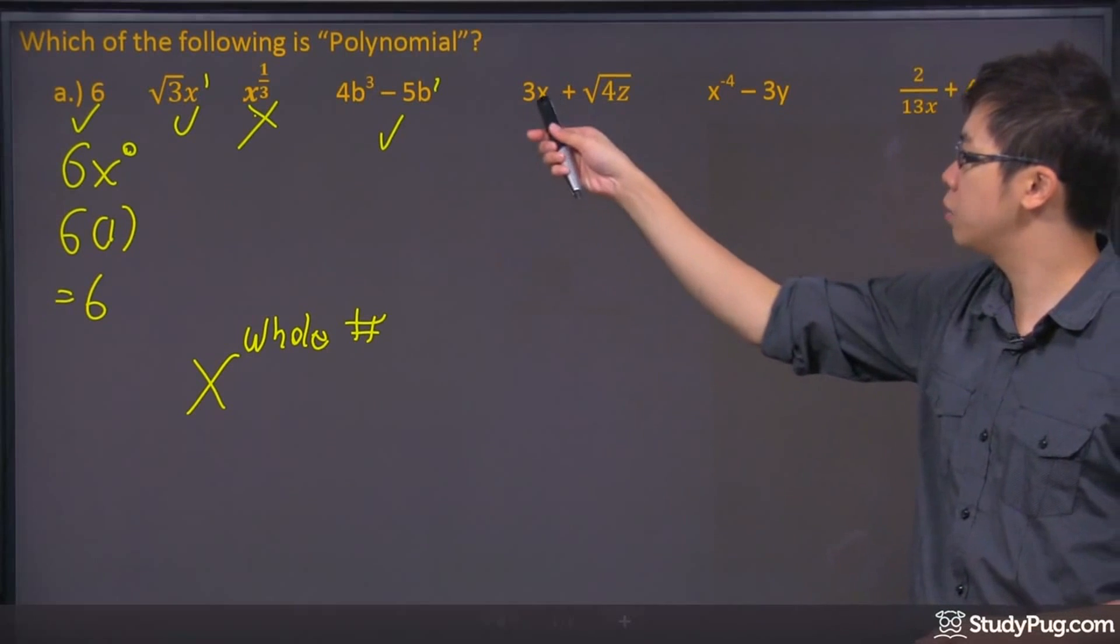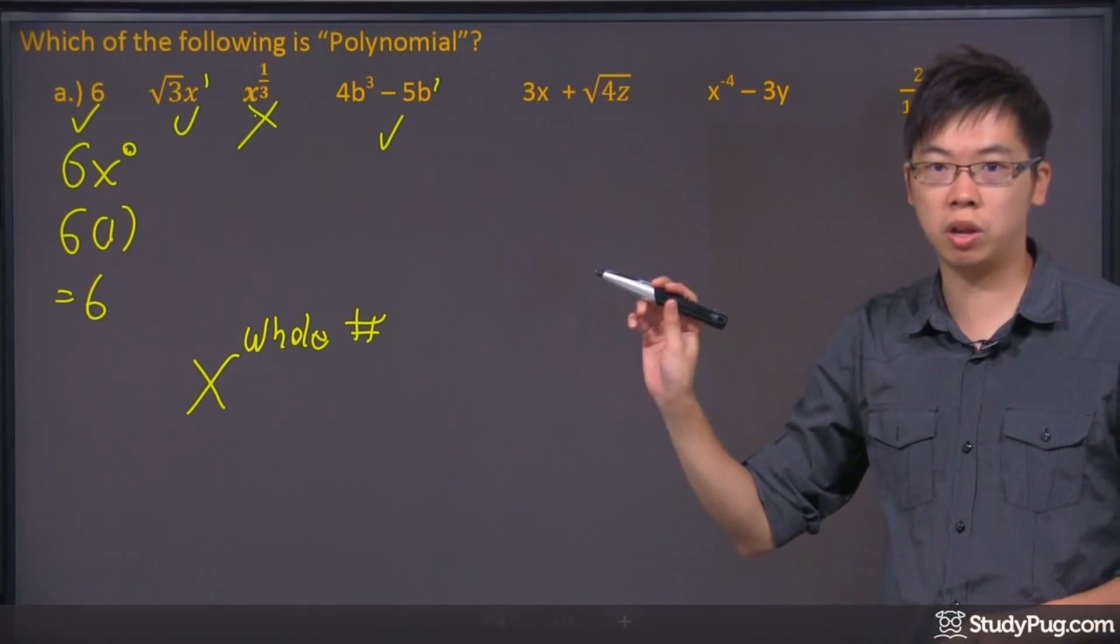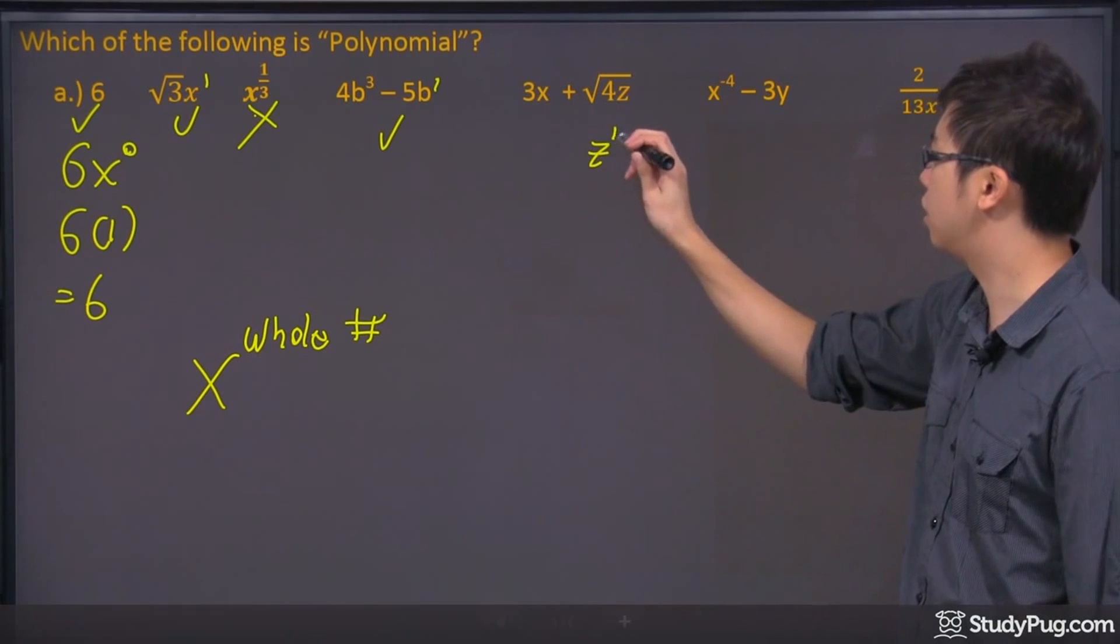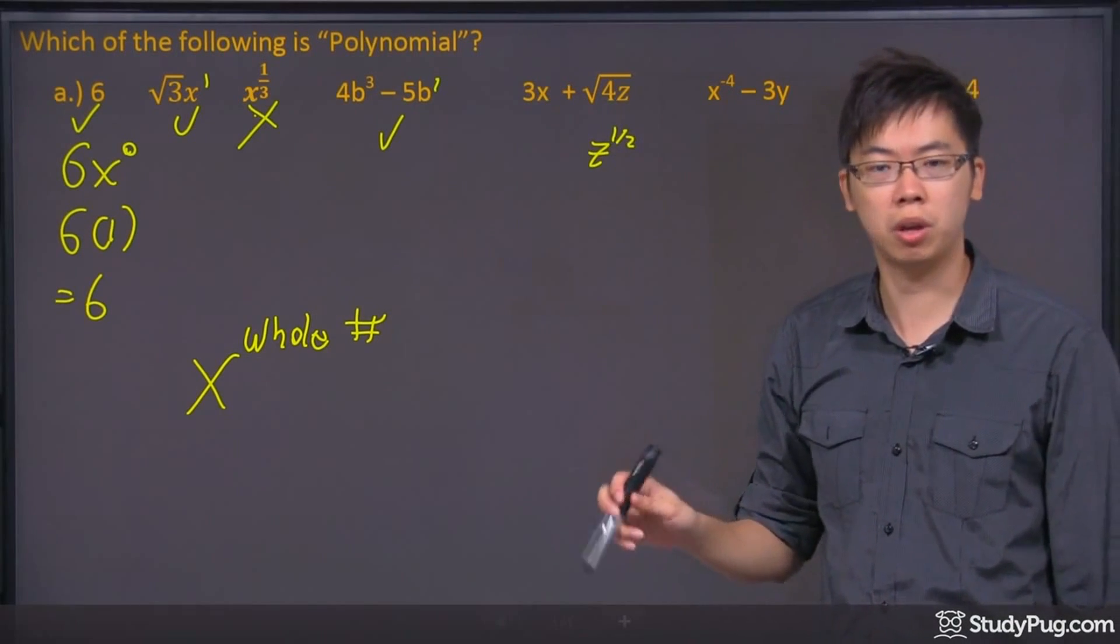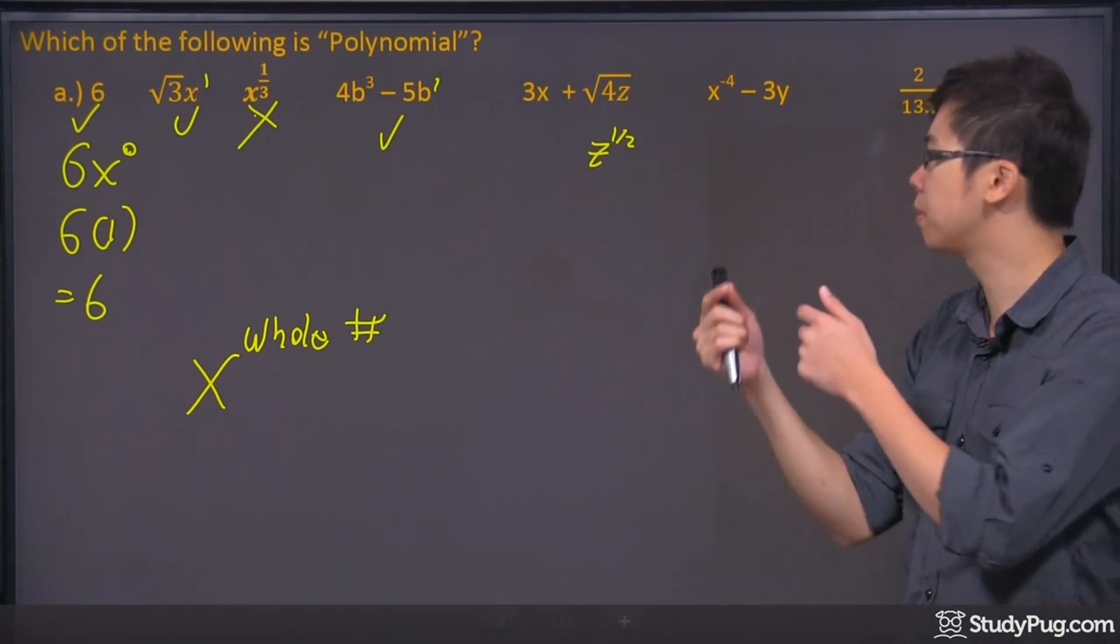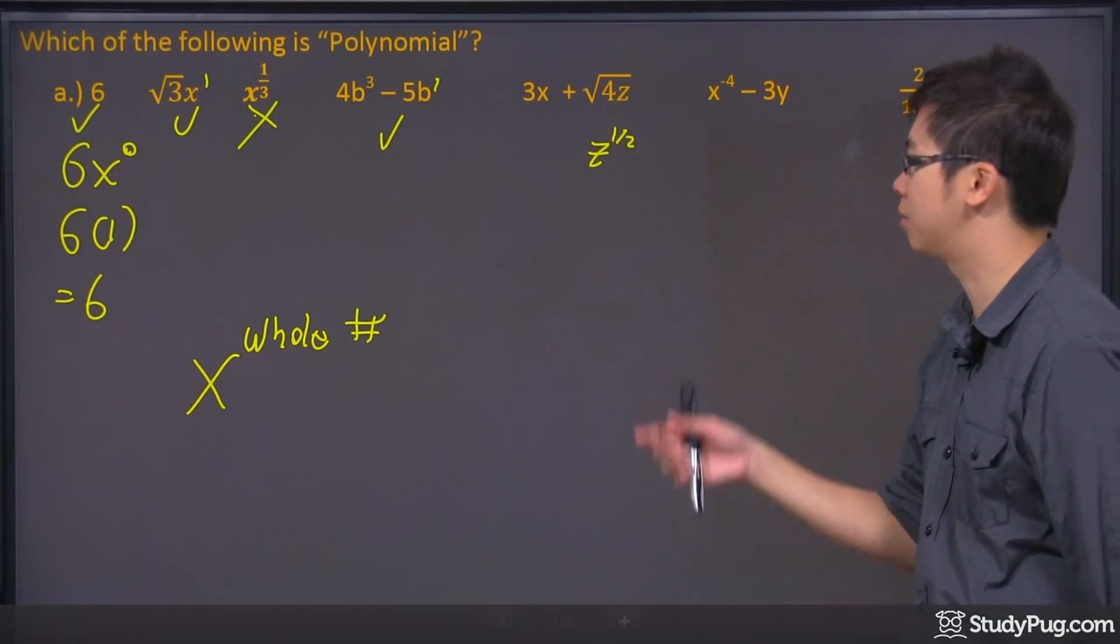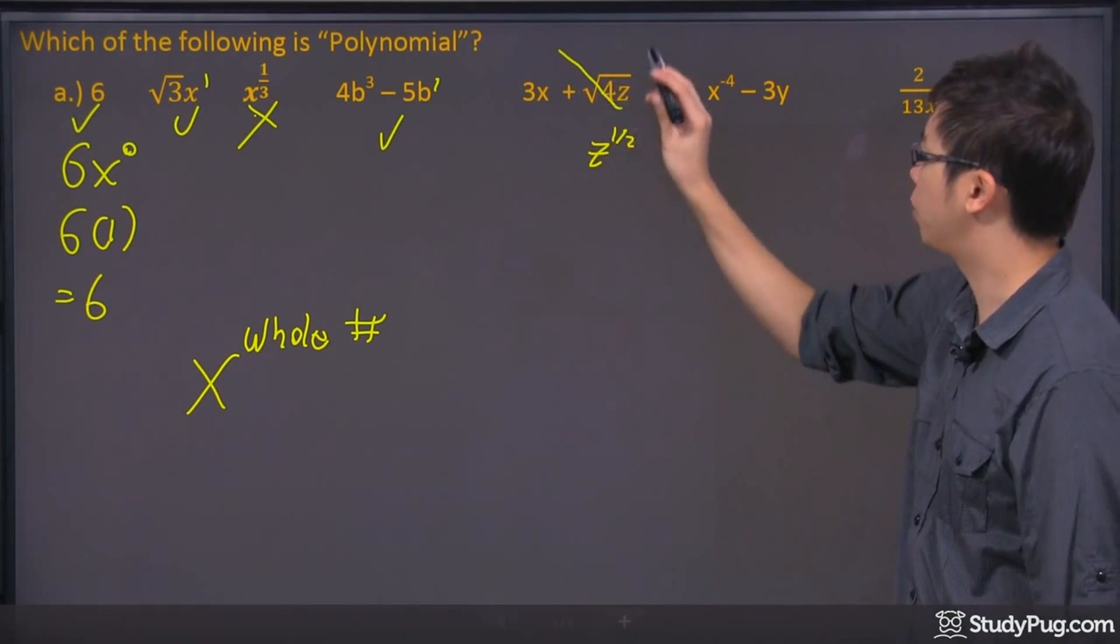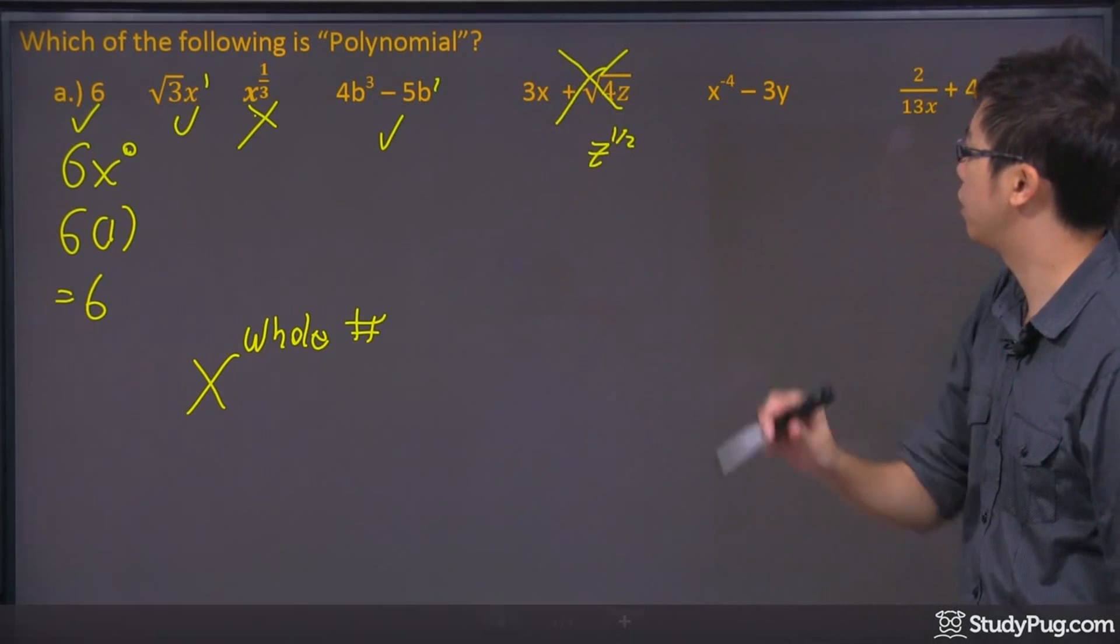This one over here, that one's okay. This one here is not okay, because the z over here, technically, is z to the power of 1/2. Because it's square root, we can change it into exponential forms. So it's just a fraction. So again, this, you cannot have a fraction, so this is not a polynomial. A little cross right there.